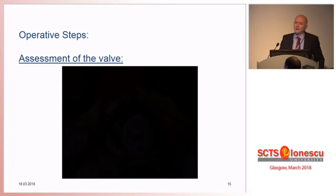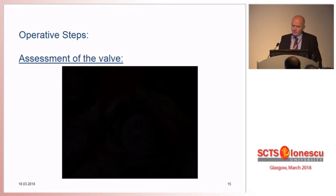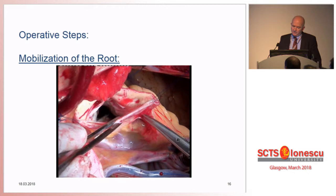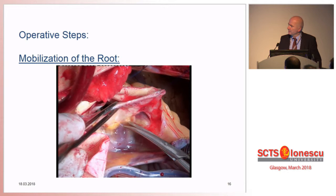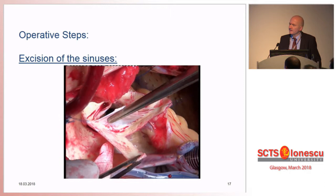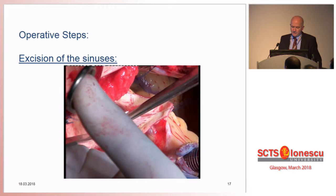Measuring the basal diameter I have found to be important, because often you will get a misleading value by TEE, with the annulus being much smaller than what you measure in the operating room. The next step is identical for re-implantation and remodeling, except that dissection goes a little further down in re-implantation. I usually leave somewhere between 5 and 7 millimeters of aortic wall remnant close to the cusp insertion line.